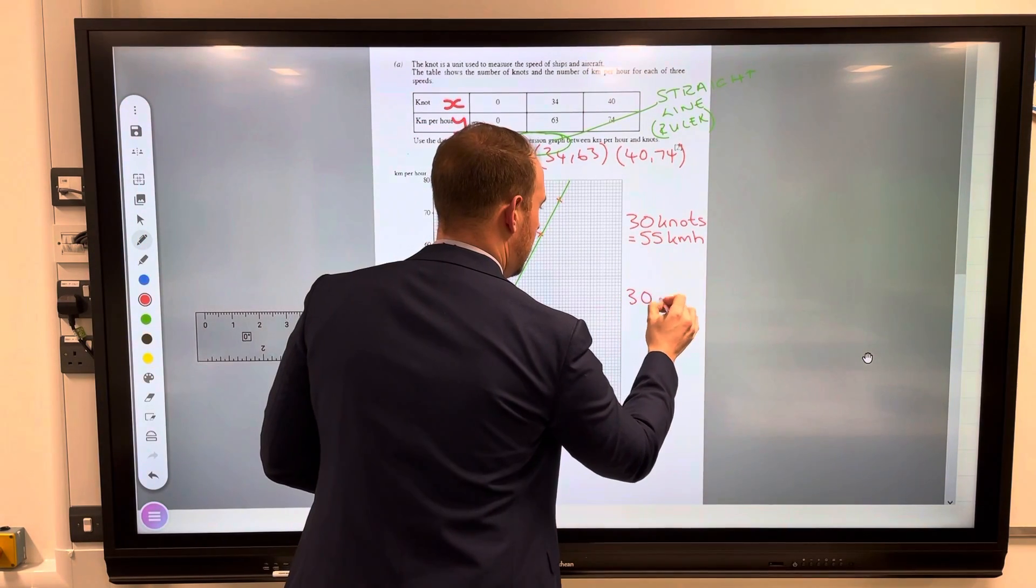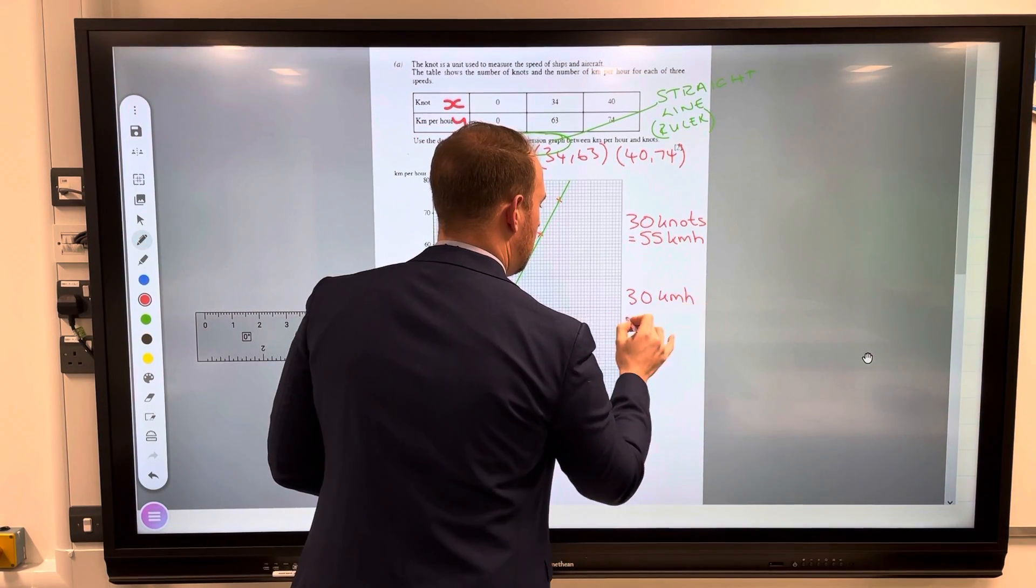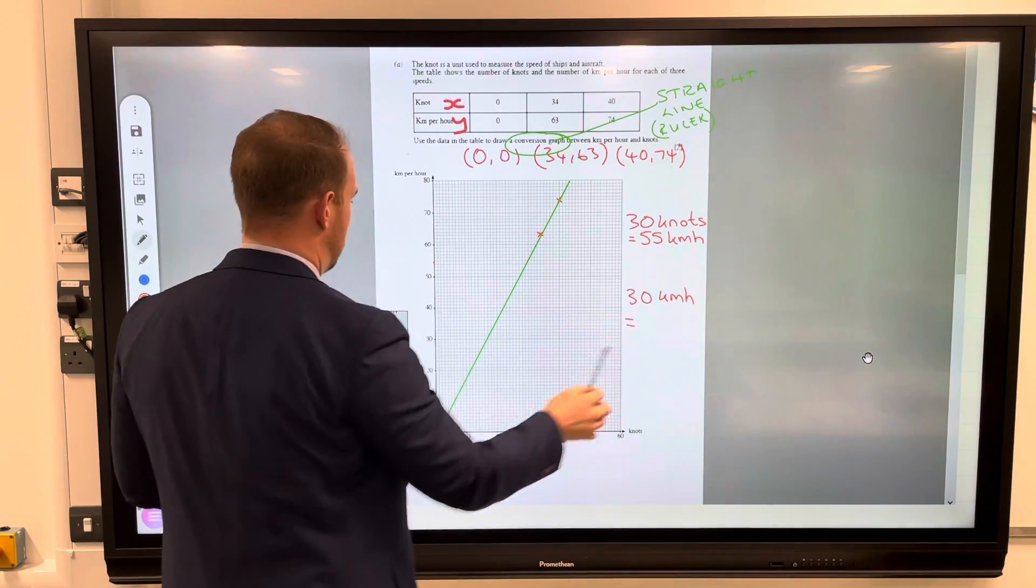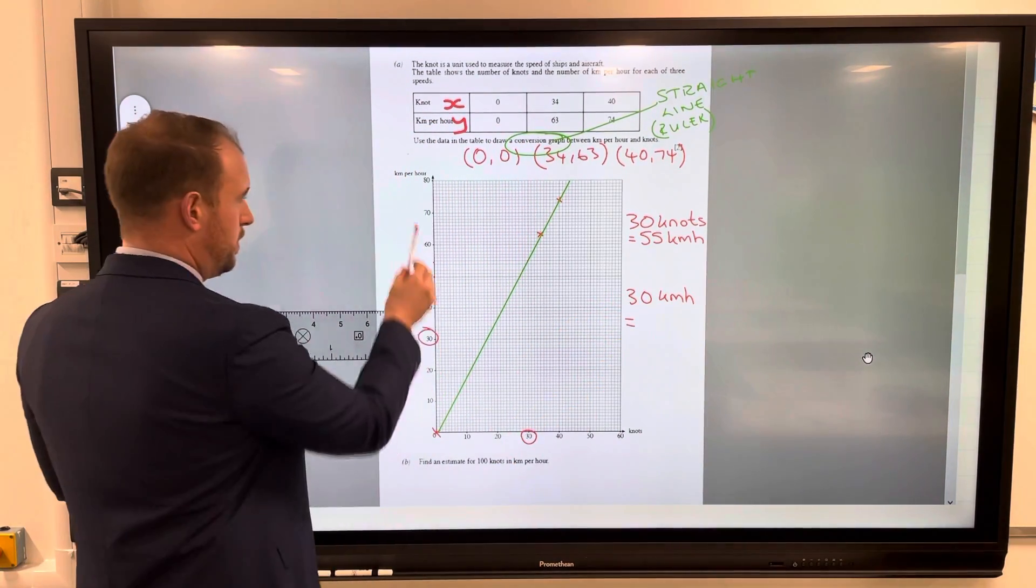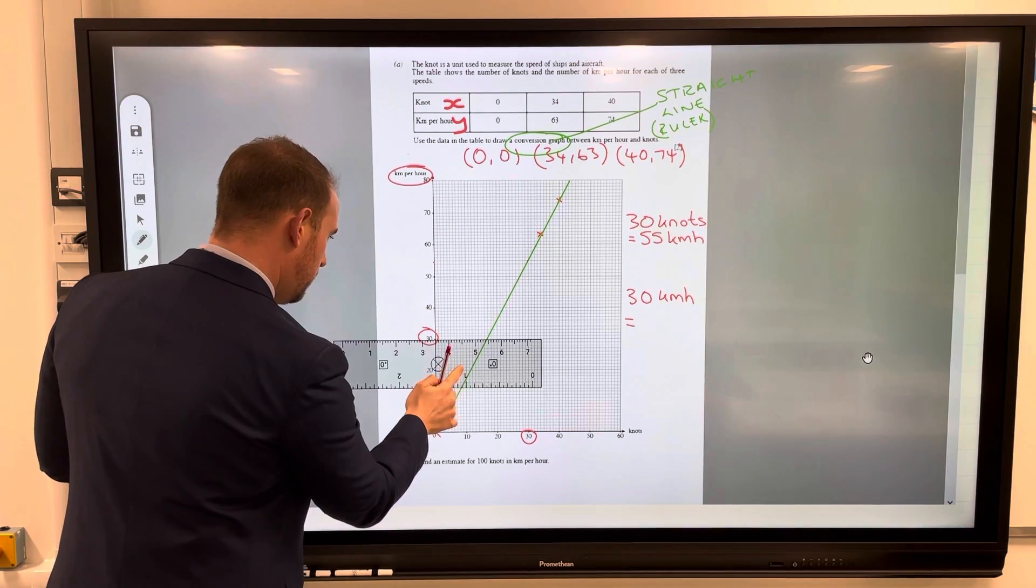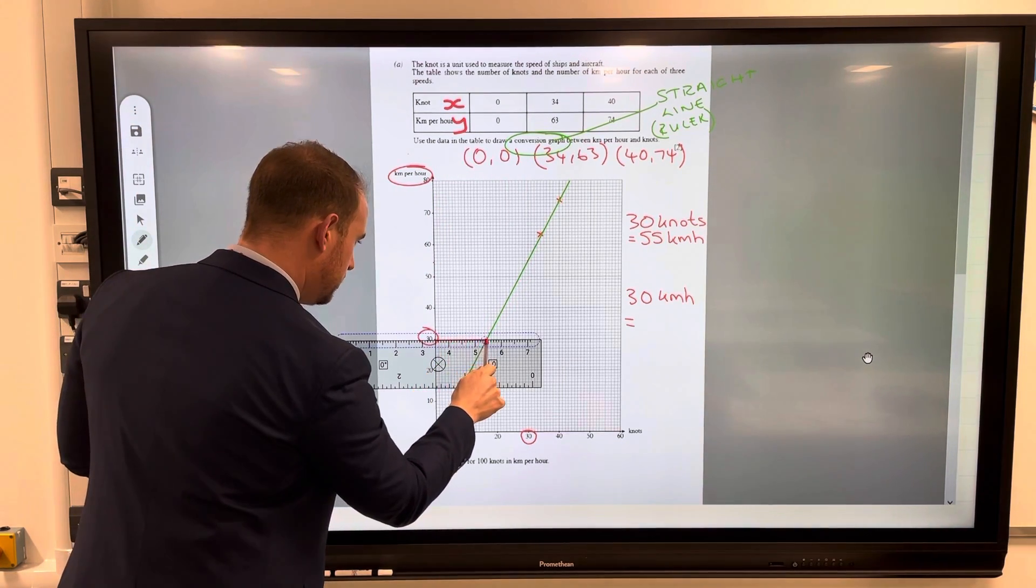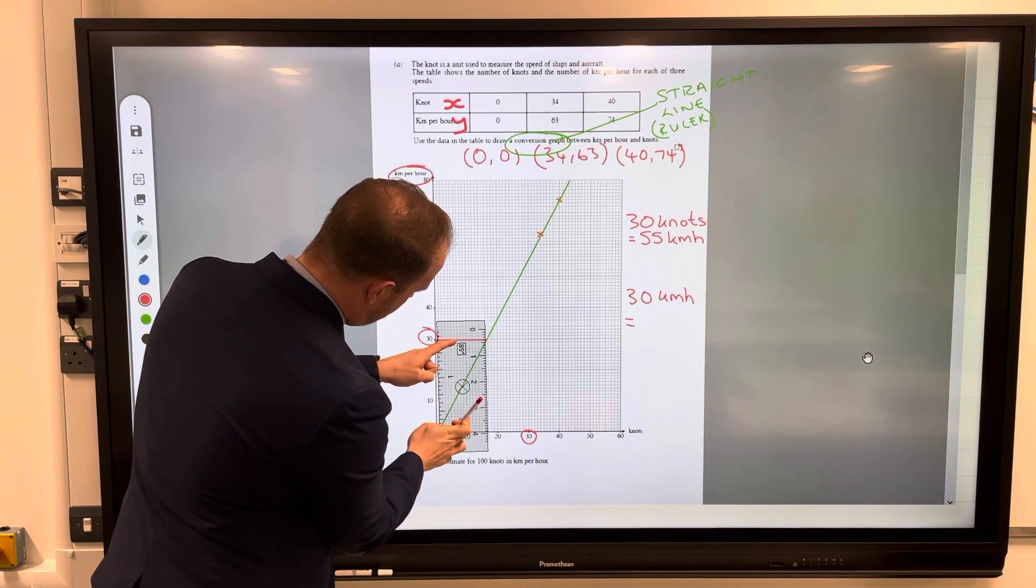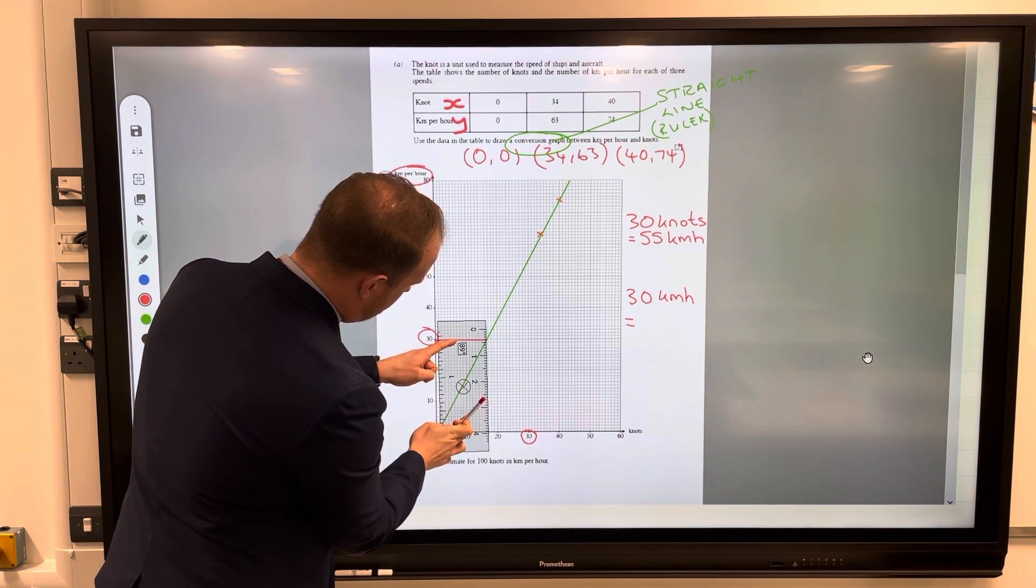So let's have another question then. Let's have 30 kilometers per hour this time and we're going to calculate that in knots. Well 30 kilometers an hour is here because this is kilometers per hour. Again using the ruler, go on 30, follow the line across till we get to the green line or your conversion graph line.